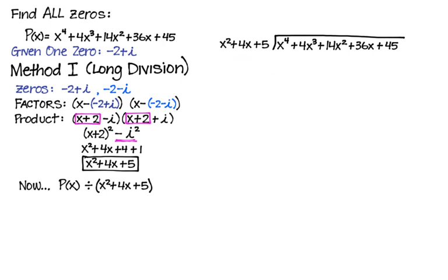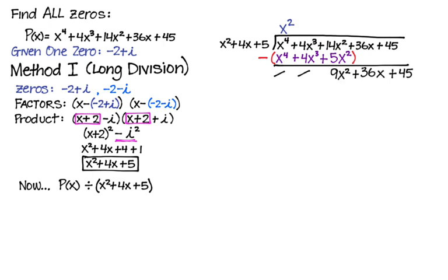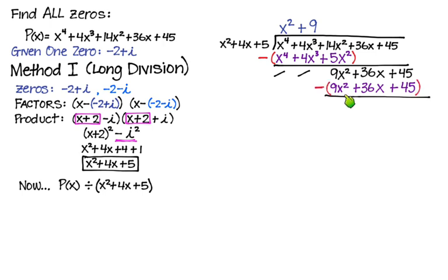Using long division, I ask: x times what gives x to the fourth? That'd be x squared. We multiply the divisor by x squared. This next step is important — make sure you are subtracting all of those terms from the polynomial. When you do that, you end up getting 9x squared plus 36x plus 45. Now we say: x squared times what gives 9x squared? That would be 9. Multiply the divisor by 9, subtract all terms, and every single one of the terms is gone — no remainder.